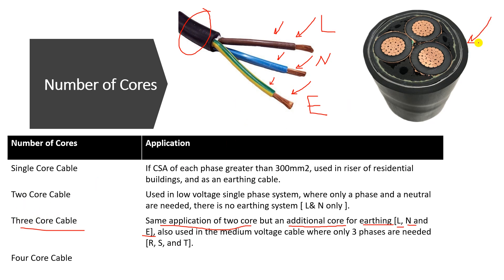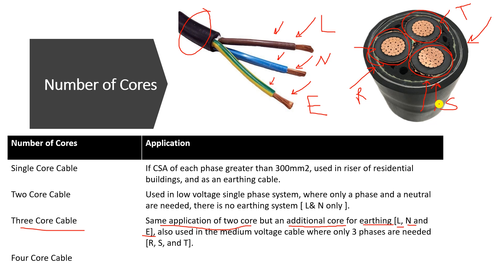The second type of three core cable is used in the medium voltage network. You can see one core, a second core, and a third core. Each core carries a different voltage: one for R, one for S, and one for T — the three phases red, yellow, and blue. Each of these cores carries a different phase voltage.